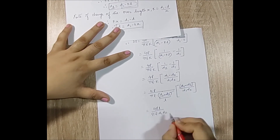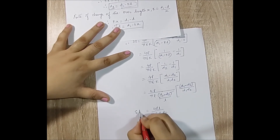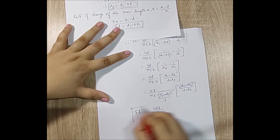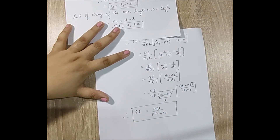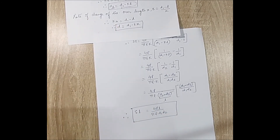The final formula for elongation of a circular cross section tapered bar is: δl = 4PL / (π·E·d1·d2).